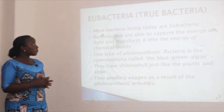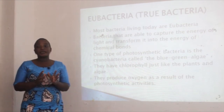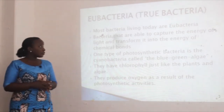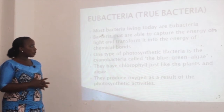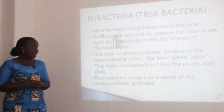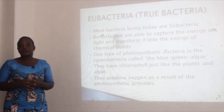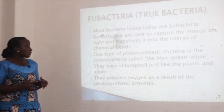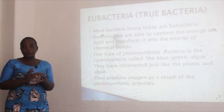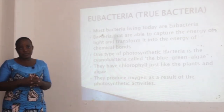The second group of bacteria are called the eubacteria, or sometimes the true bacteria — these are the most common bacteria that live today. These bacteria are capable of capturing energy from light and transforming it into chemical bond energy. One type of photosynthetic bacteria is called the cyanobacteria, or sometimes called the blue-green algae. They are called photosynthetic bacteria because they carry out the process of photosynthesis just like plants. They have chlorophyll — the green pigment found in the chloroplast — which is capable of capturing light from the sun and using it in photosynthesis to manufacture food.